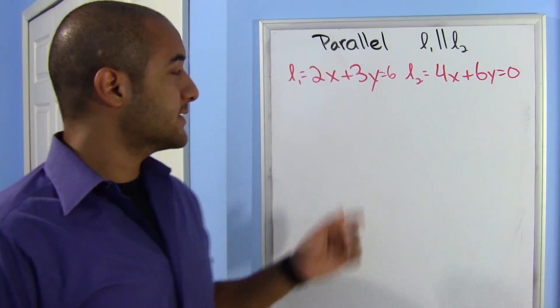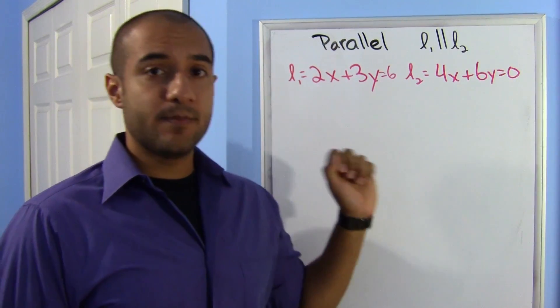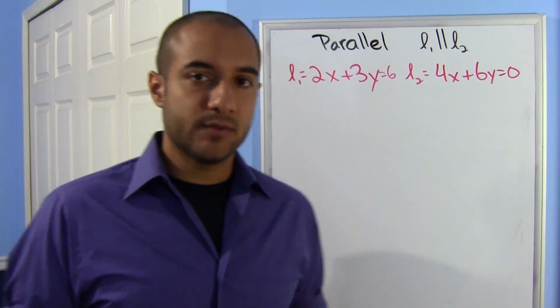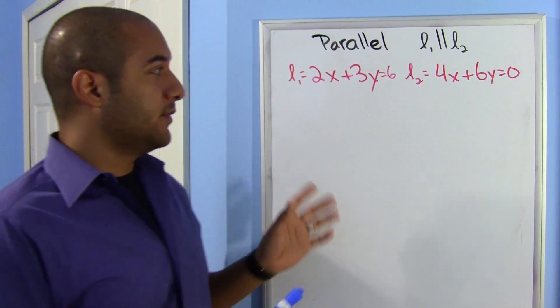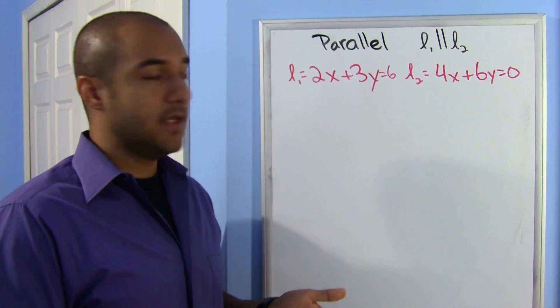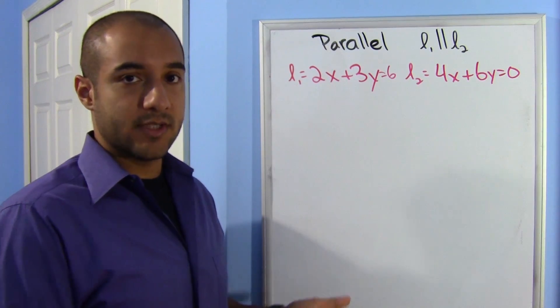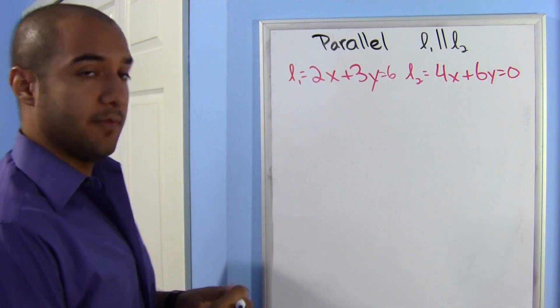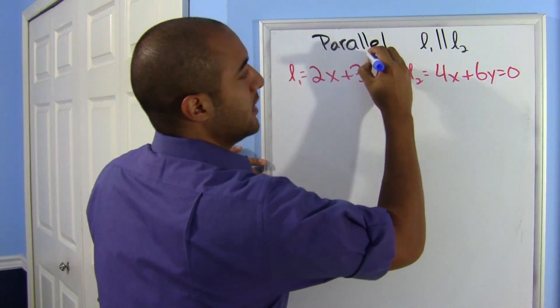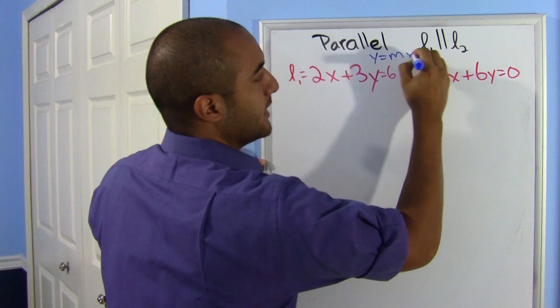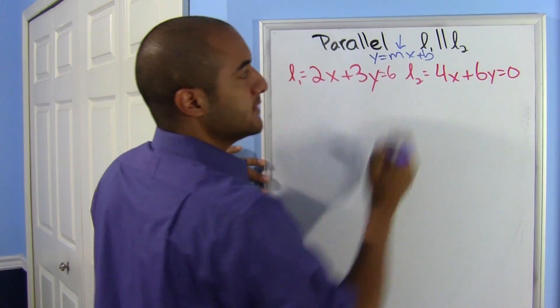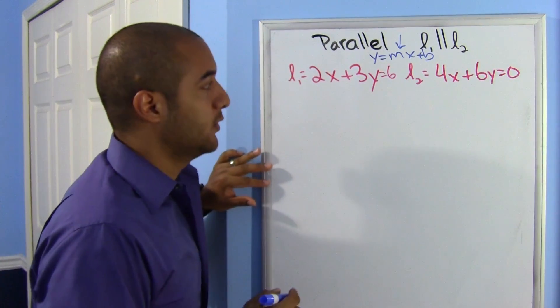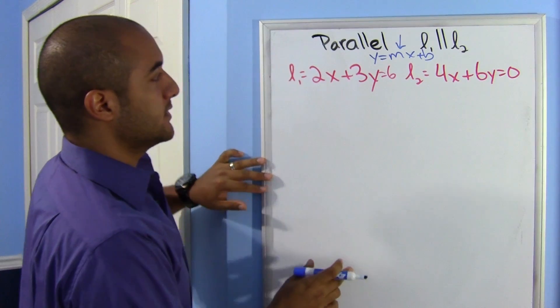Alright, here they're asking us if line 1 is parallel to line 2. Now remember, their slopes have to be the same. The easiest way for me to know what their slopes are is to move them into slope-intercept form. Like that, I'm looking at their slope right away. So remember, you want it to look like this: y equals mx plus b, and this is what you're looking for. You're looking for your slope. So let me work with that first line.